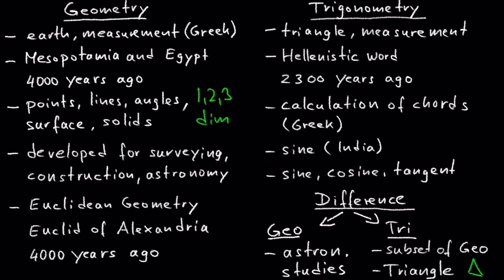Third, the main difference between geometry and trigonometry is that trigonometry emerged from geometry being applied to astronomy. Trigonometry is a subset of geometry that deals with the properties of one of the shapes in geometry called the triangle.